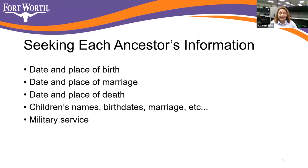What are you trying to find? You're seeking each ancestor's information. You're looking for the date and place of birth, the date and place of marriage, the date and place of death, children's names, birth dates, marriage dates, and military service. Ideally, you're trying to find all of this information for each ancestor in your family tree. For some ancestors, it'll be really easy to find a lot of information, and for others it'll be more difficult. So that's normal — just persist.